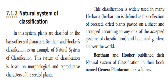Natural system of classification. In this system, plants are classified on the basis of several characters. Bentham and Hooker's classification is an example of the natural system of classification. This system is based on morphological and reproductive characters of seeded plants, and is widely used in many herbaria and botanical gardens all over the world.